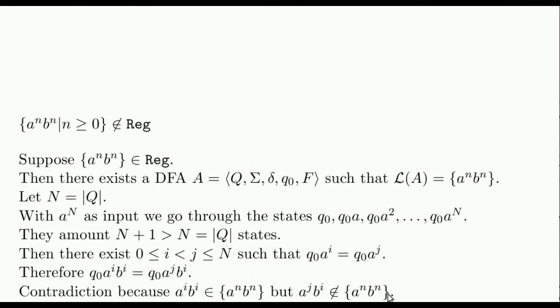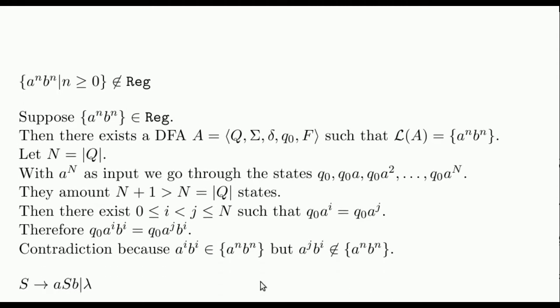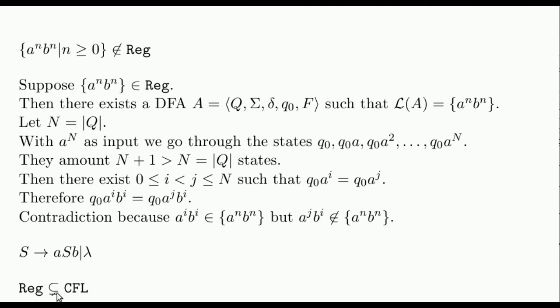This is impossible, so we have contradicted the hypothesis and this finishes the proof. The A^n B^n is a context-free language since this grammar generates it. This justifies that the inclusion of regular languages in context-free languages is actually a strict inclusion.